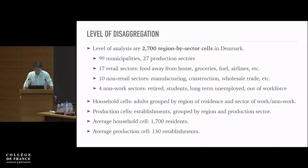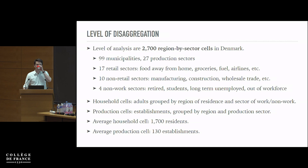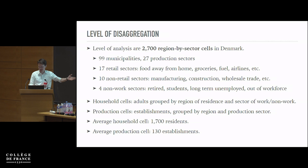Household cells are defined as adults grouped by region of residence and sector of work or non-work. Production cells are establishments grouped by region of location and production sector. The average household cell is fairly small — about 1,700 residents — and the average production cell has about 130 establishments. We use sector of work and location rather than assets as grouping characteristics, since in many models assets are more endogenous than sector of work or location.